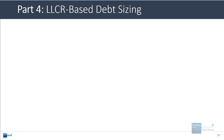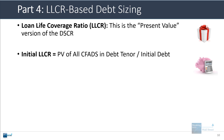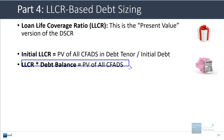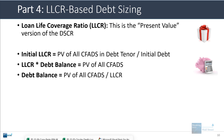Let's look at an example of sizing based on the loan life coverage ratio. This is the present value version of the DSCR. The initial LLCR when the debt is first issued equals the present value of all cash flow available for debt service over the debt tenor, divided by that initial debt number. Rearranging: LLCR times the debt balance equals the present value of all CFADS. Dividing both sides by the LLCR: the debt balance equals the present value of all CFADS divided by the LLCR. Let's go into Excel and see how this works.